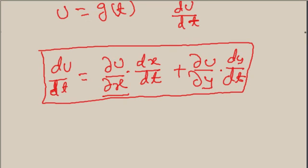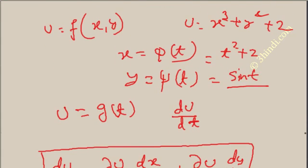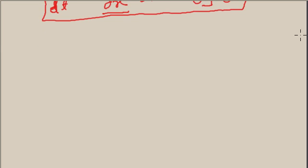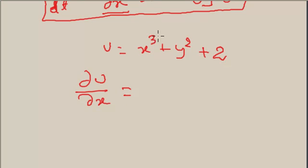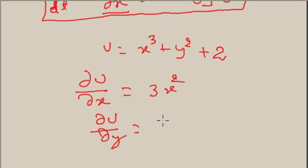In the above example, suppose u = x³ + y² + 2. Here u is a function of x and y. So ∂u/∂x is equal to 3x² and ∂u/∂y is equal to 2y.